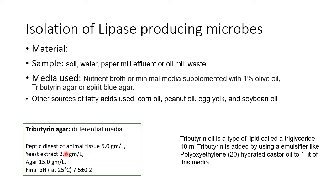Tributyrin agar is a differential media containing peptic digest of animal tissue, yeast extract, and agar at pH 7.5. Tributyrin oil, a type of triglyceride, is added — 10 ml per liter of media — using an emulsifier such as polyoxyethylene 20 and hydrated castor oil to form a proper emulsion.